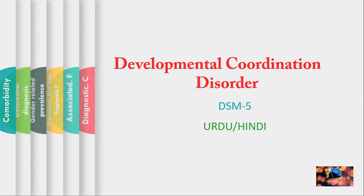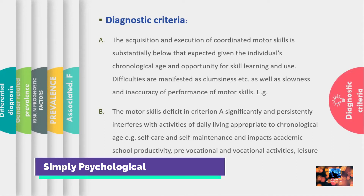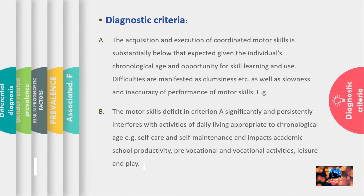If we talk about Diagnostic Criteria, Criterion A is the acquisition and use of coordinated motor skills below what is expected for an individual's age. Learning these skills and using them are problematic. Coordinated motor skills are affected — individuals are clumsy.